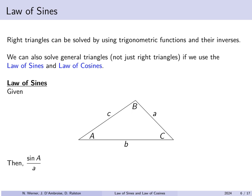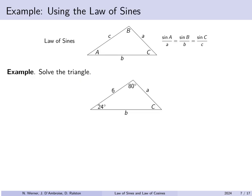So in any triangle, the sine of angle A divided by the length of side a will be the same number as the sine of angle B divided by length b, and the same as the sine of angle C divided by length c. Between different triangles these quantities will be different, but in any one triangle these ratios will all give you the same number. Let's use it to solve this triangle. Observe that we are given two angles — 80 degrees and 24 degrees — and one side length of 6 in between them. This is an angle-side-angle congruence.